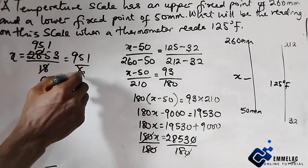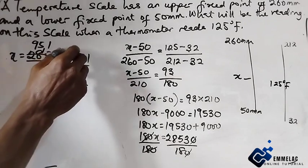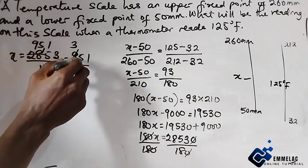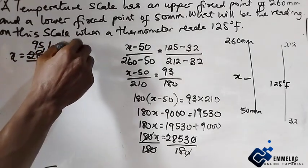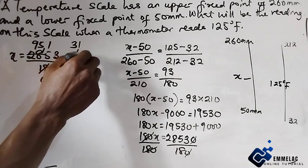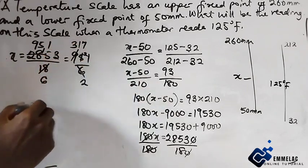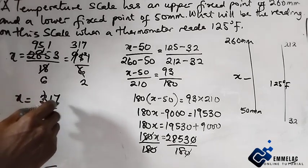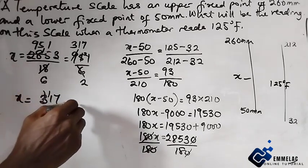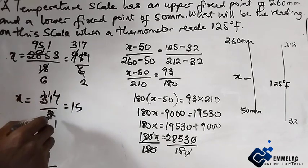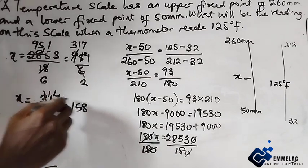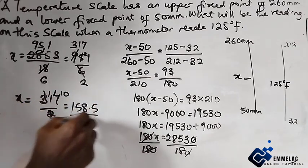Continuing the division: 3 into 9 is 3, 3 into 15 is 5 remainder 0, 3 into 1 gives 317 over 2. Now 2 into 3 is 1 remainder 1, 2 into 17 is 8 remainder 1, 2 into 10 is 5.